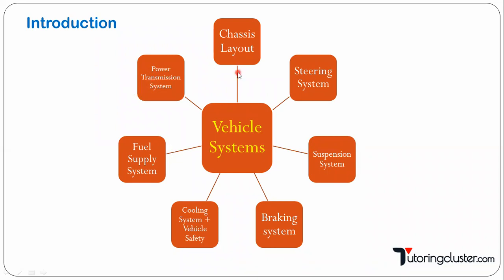Then there will be a chassis layout. Chassis is nothing but the skeleton frame of the vehicle — we are going to learn the chassis layout in this video. Then to turn the vehicle you need a steering system. To prevent shocks you are going to have a suspension system. If you want to vary the speed or stop the vehicle, you are going to need a braking system. To cool your engine and for safety features like airbags and ABS, that part is also going to come.